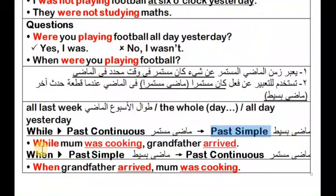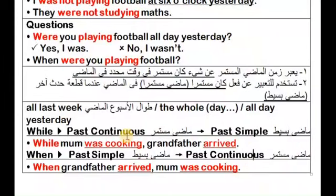When بعدها ماضي بسيط، والحدث التاني ماضي مستمر. لازق بعد when على طول ماضي بسيط. ينفع الاثنين يكونوا مستمر؟ أيوه، يجوز الاثنين يكونوا مستمر لو الحدثين مفيش واحد فيهم قطع التاني، فالاثنين يكونوا مستمر مع while.